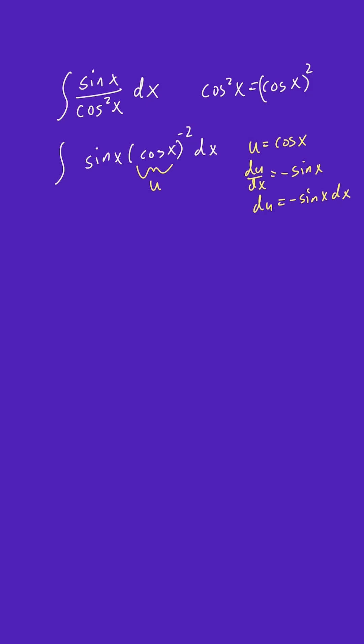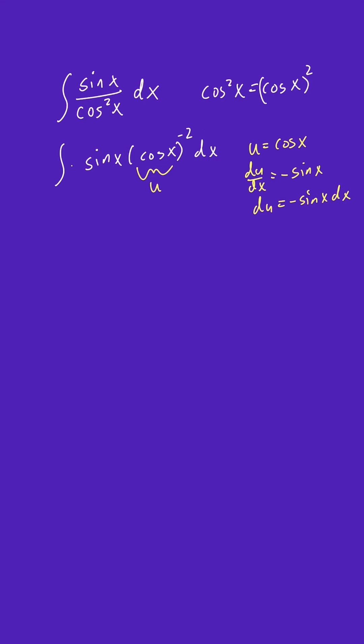So we need a minus sine x dx in our original expression, which we have here almost. So we have sine x dx. So I just need to add a negative sign here. And to do that, I need to put a negative out here because a negative 1 times negative 1 is just positive 1. So we're not actually changing the value of the expression. So now we can rewrite this as negative, and the negative sine x dx becomes du, and then we have u to the negative 2. So u to the negative 2 du.